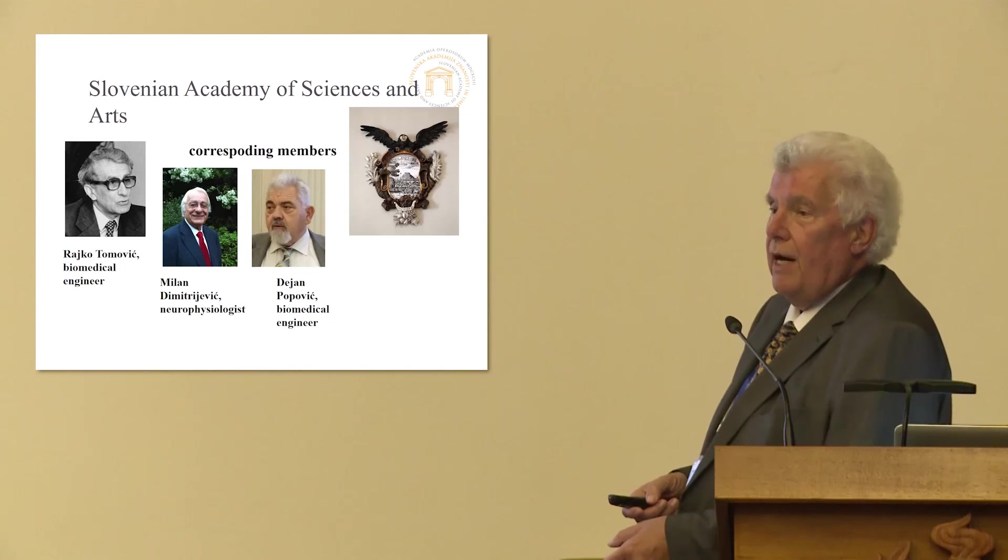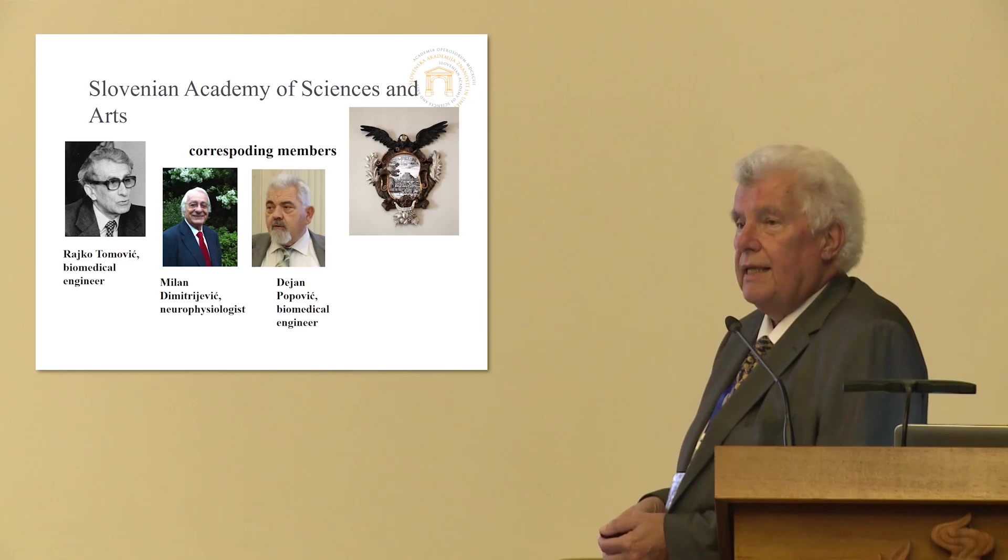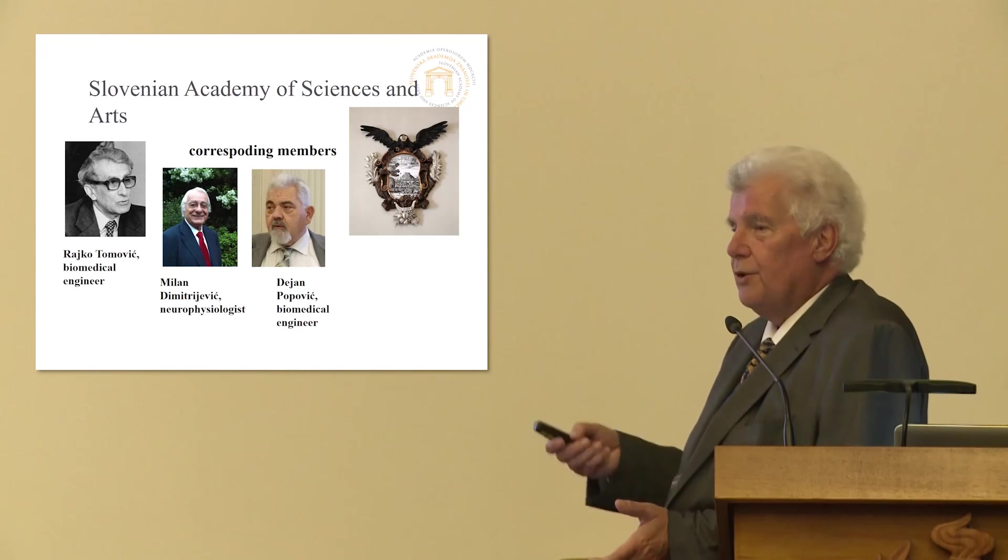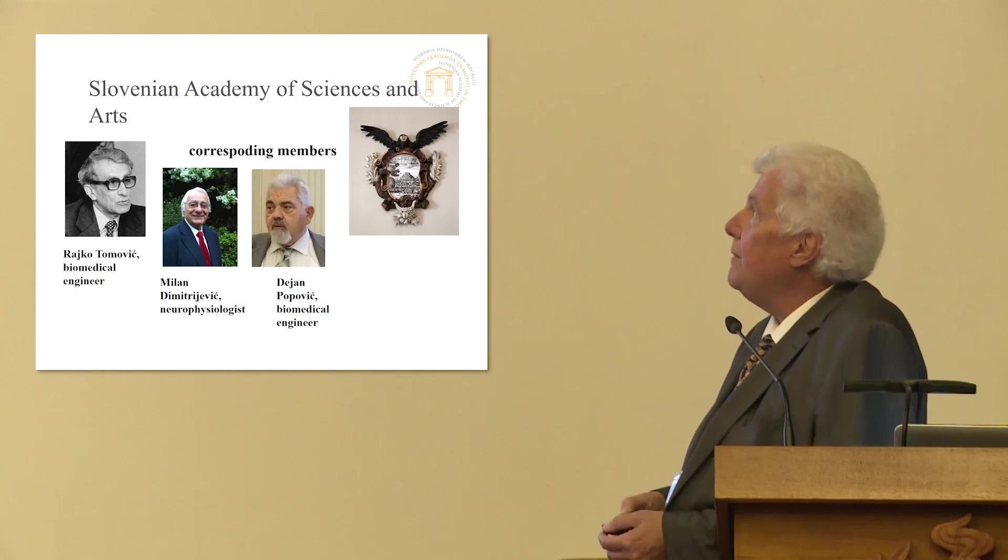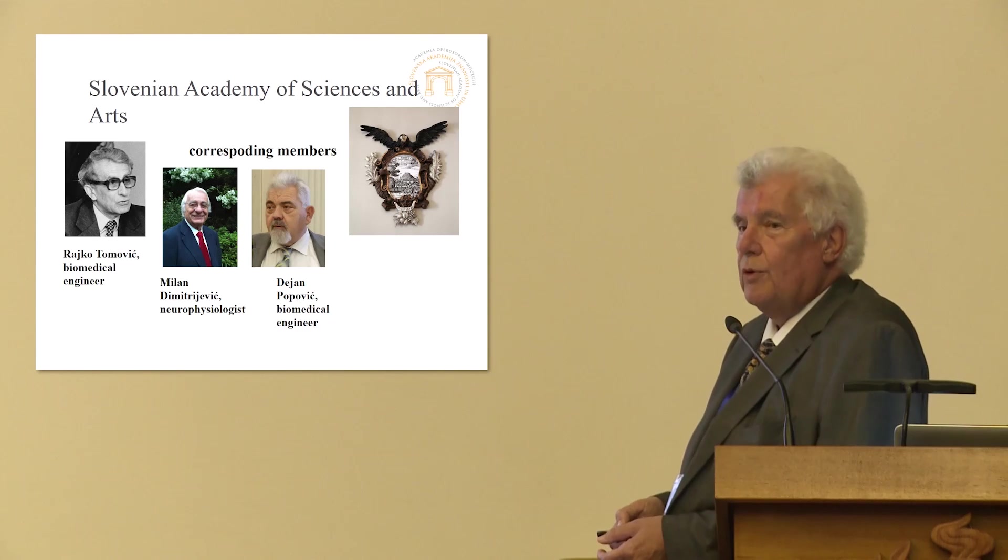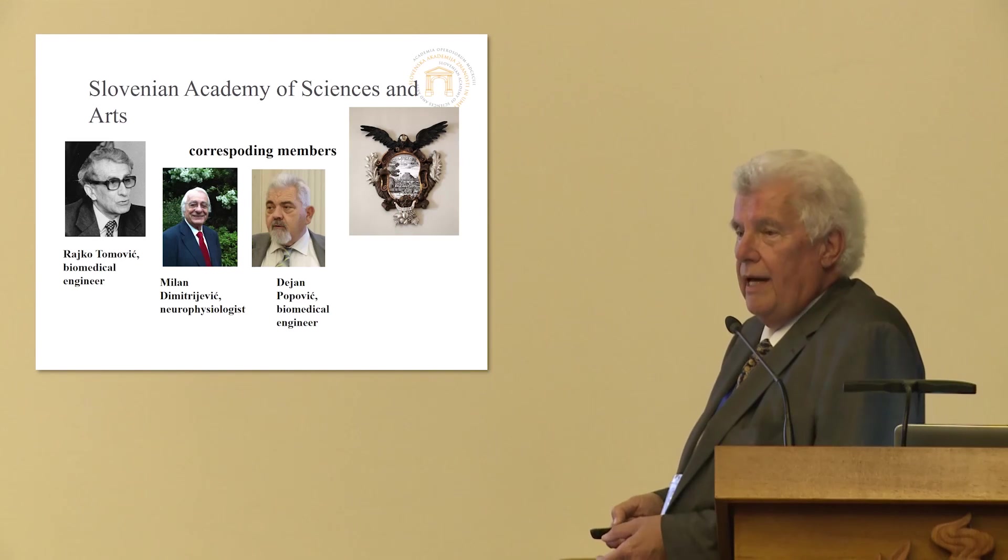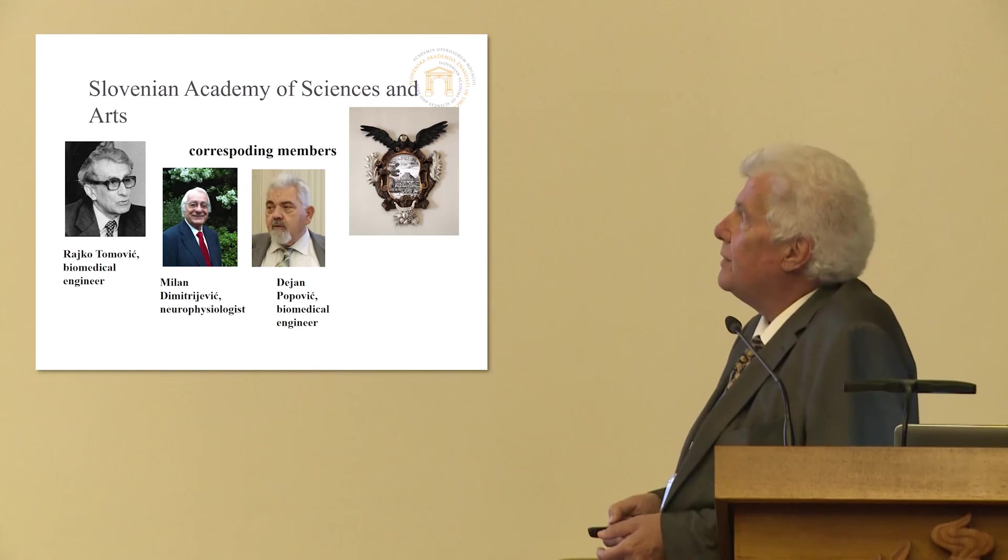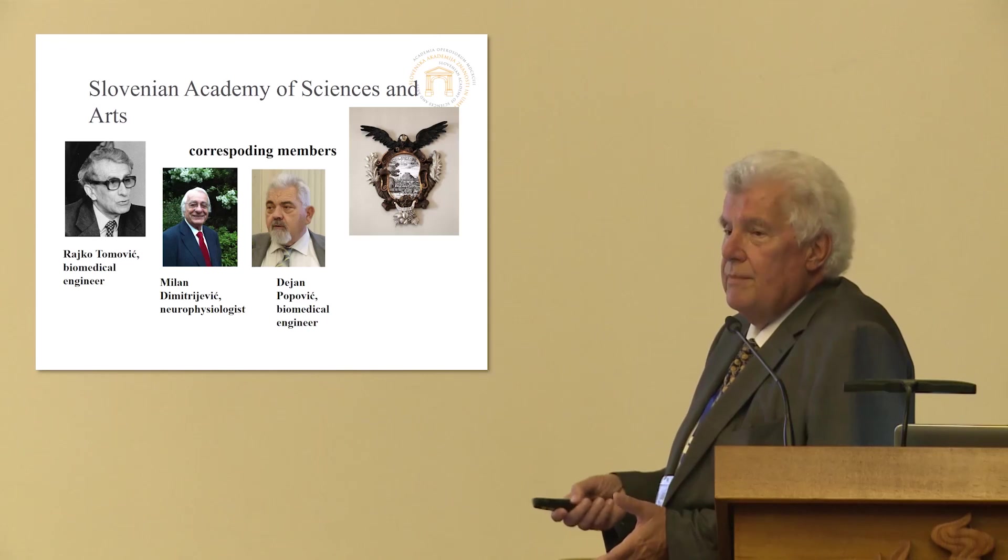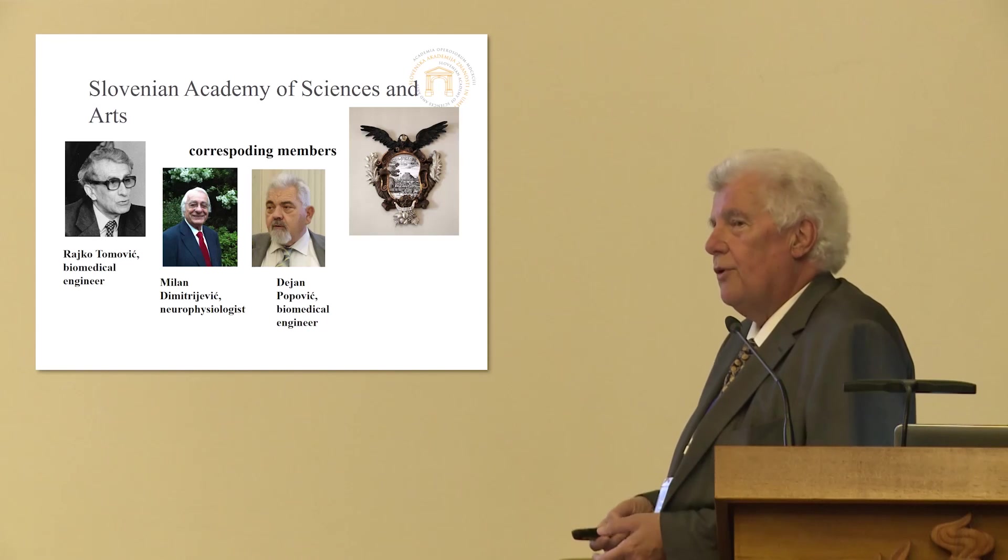In Ljubljana we are also very proud that we had first academy already in 17th century, when the first European academies were established. In 1693 we had so-called academia operosorum, academy of industrious people. And in the same way we are very proud that we have very important corresponding members. We have 84 corresponding members. All of them are characteristic for all of them is strong collaboration with the science or arts in Ljubljana.